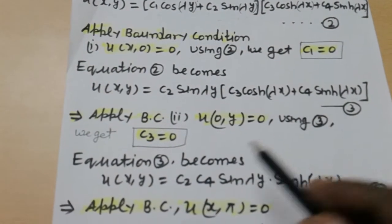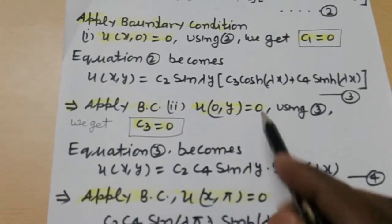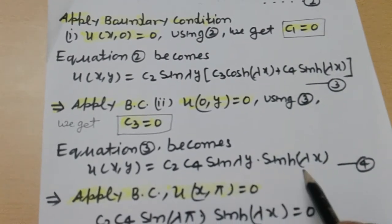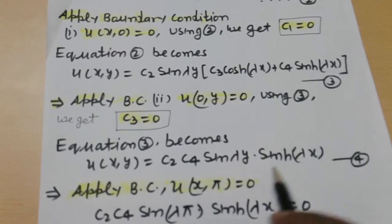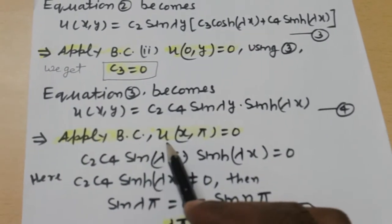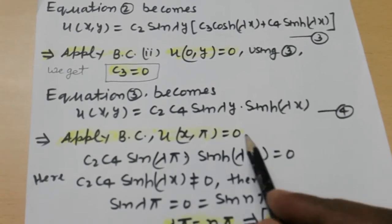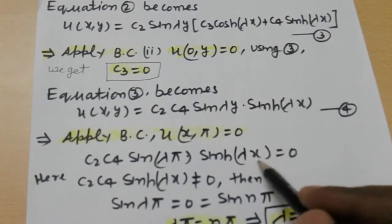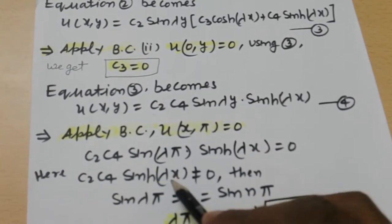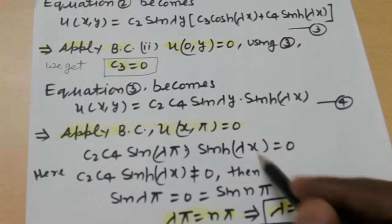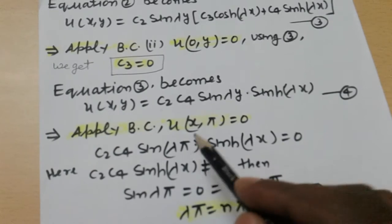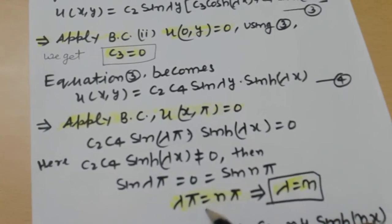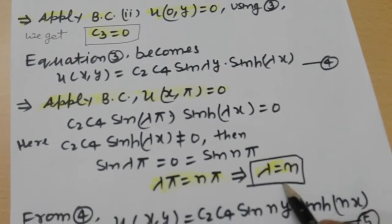Equation 3 becomes u(x,y) = c2 c4 sin λy · sinh λx, this is equation number 4. Applying the boundary condition u(x,π) = 0, we get c2 c4 sin λy · sinh λx = 0. Since c2 c4 sinh λx ≠ 0, we need sin λπ = 0, so λπ = nπ, implying λ = n.